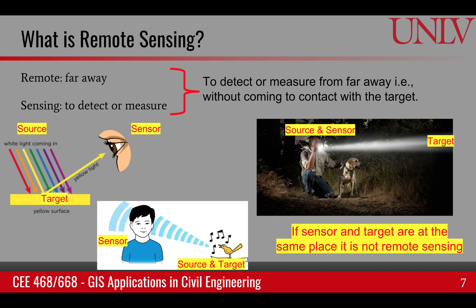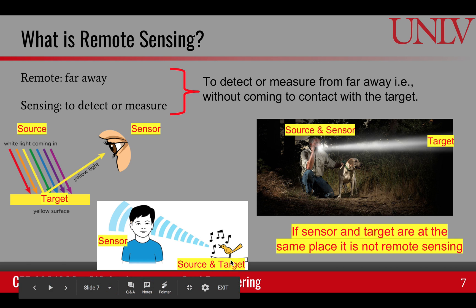So what is remote sensing? It means perceiving or detecting from far away — remote means far away, and sensing means to detect or to measure. If a source of light reaches a target and is reflected, and we perceive that reflected light, then the sensor detects information about the target. It's not necessarily the case that the source must be separate; sometimes the target is itself the source of energy, for example in the case of sound waves.